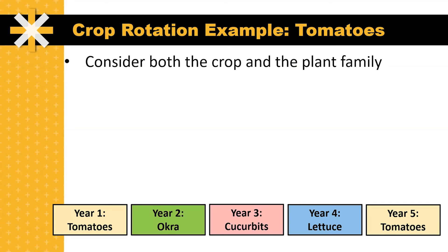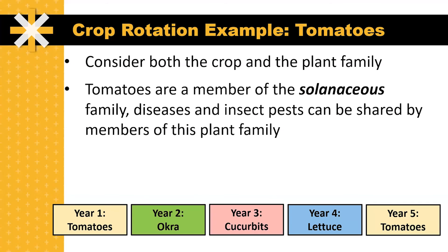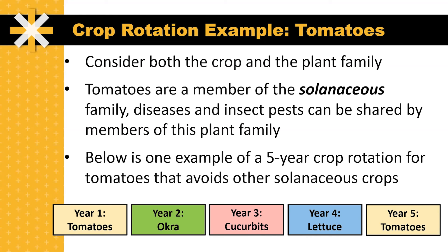When you're planting a crop rotation, consider both the crop and the plant family. Tomatoes, as we stated, are a member of the solanaceous family. Diseases and insect pests can be shared by members of this plant family. Below is just one example of a five-year crop rotation for tomatoes that avoids other solanaceous crops.